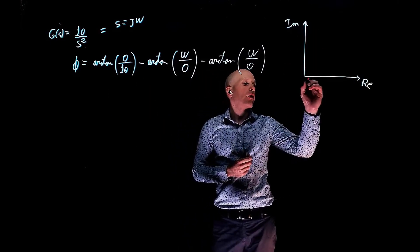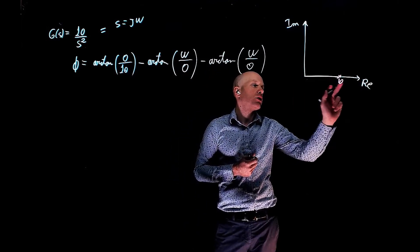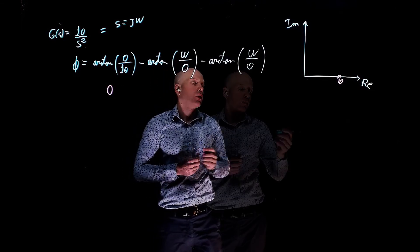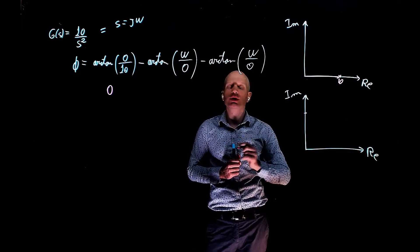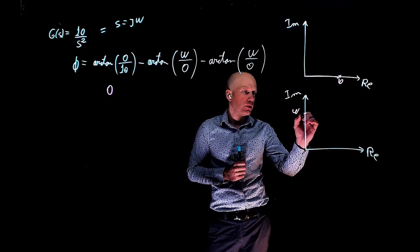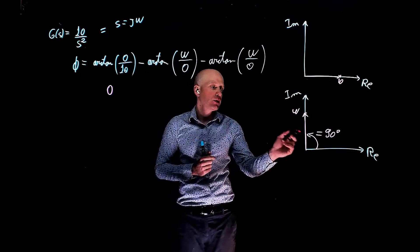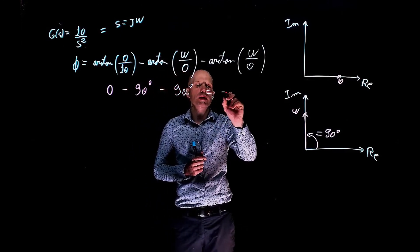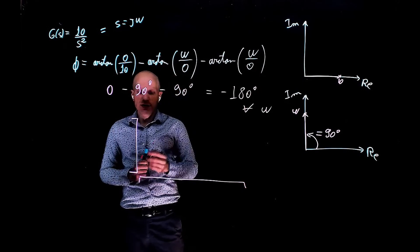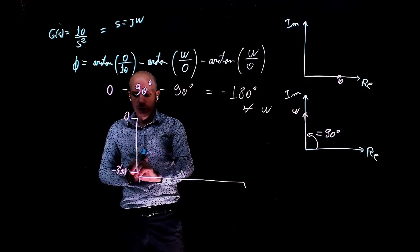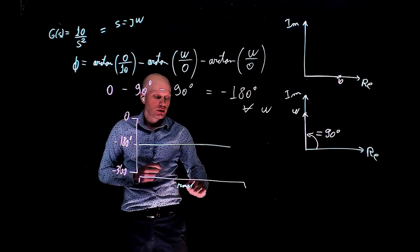Starting with the constant gain: we have a magnitude of 10 on the real axis and 0 on the imaginary part, so the angle is 0. For the poles at the origin, we have a magnitude of omega on the imaginary axis and 0 on the real axis, so the angle is 90 degrees. But because these are poles we have a negative sign, giving negative 90 degrees for each. This results in negative 180 degrees for all frequencies. On the Bode plot, the phase is simply a constant value of negative 180 degrees for all frequencies.